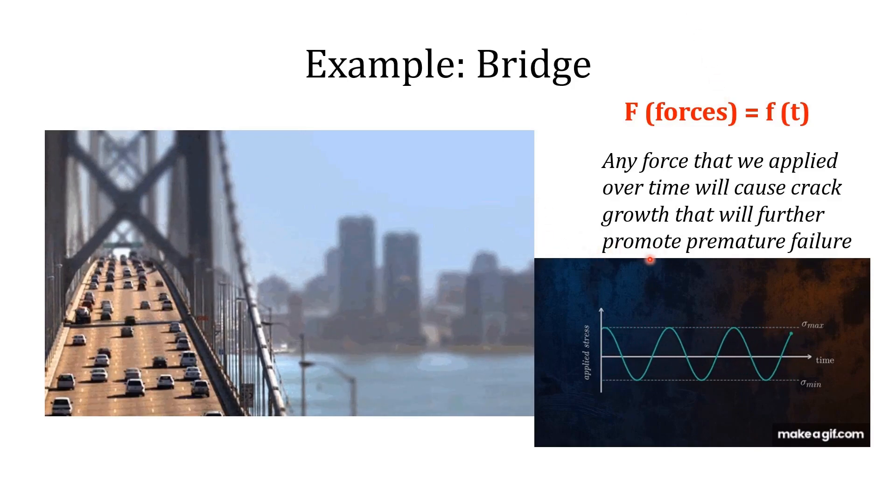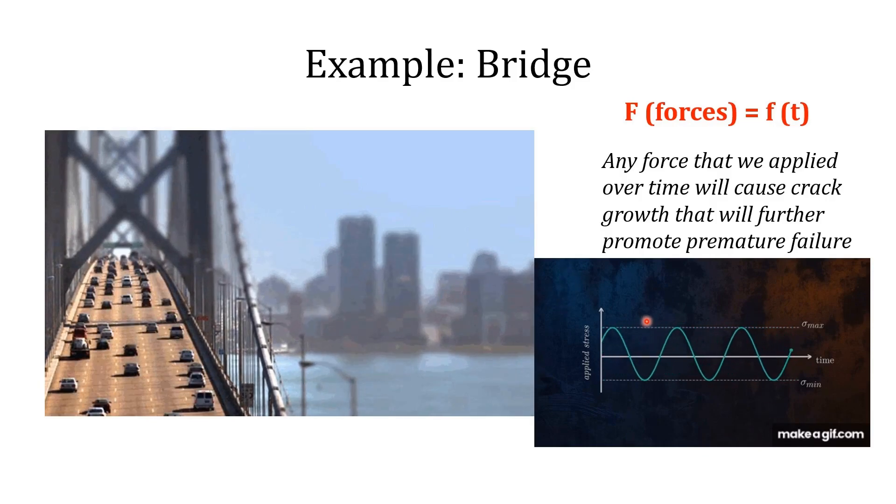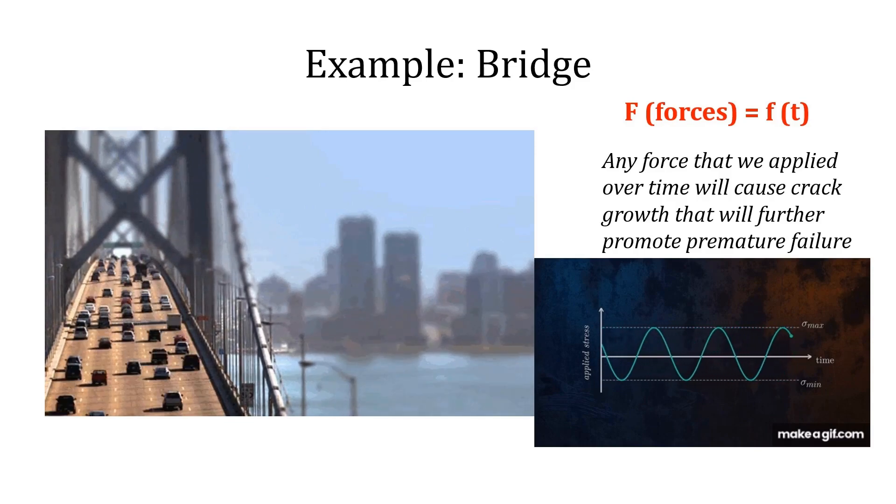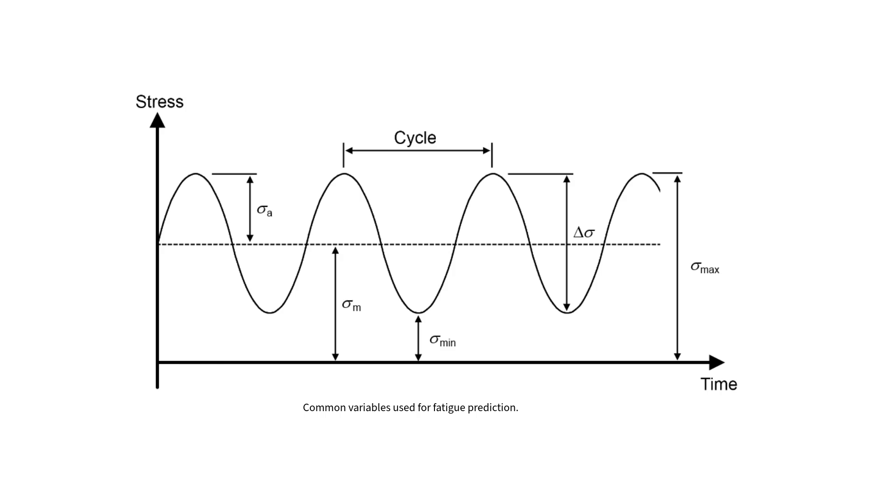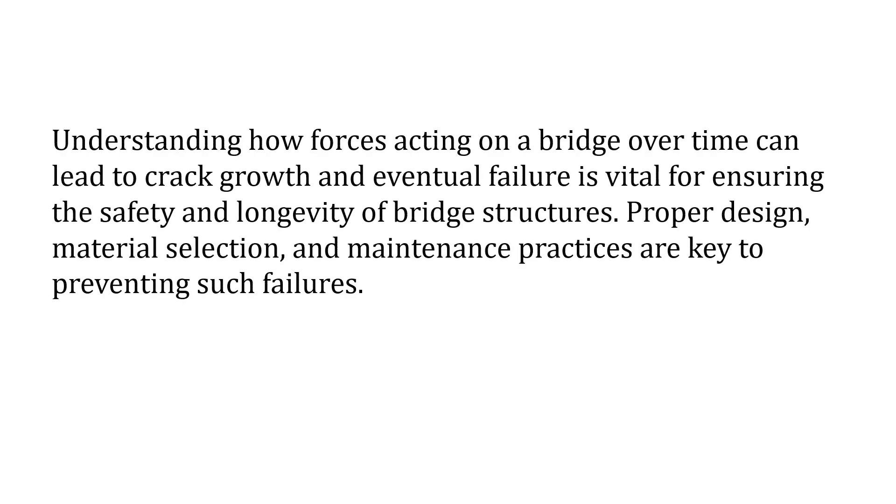And if we look at the graph here, we can see cyclic loading, meaning that the repeated application of forces as depicted here in the graph will lead to cyclic loading on the bridge structure. And over time, these cyclic forces can cause small cracks to grow larger, and continuous growth of these cracks can result in structural failure, even before the expected lifespan of the bridge. And it is important for us to understand how forces acting on the bridge over time can lead to crack growth and eventual failure is vital for ensuring the safety and longevity of bridge structures. So what we need is proper design, good material selection, and maintenance practices that are key factors to preventing such failure.